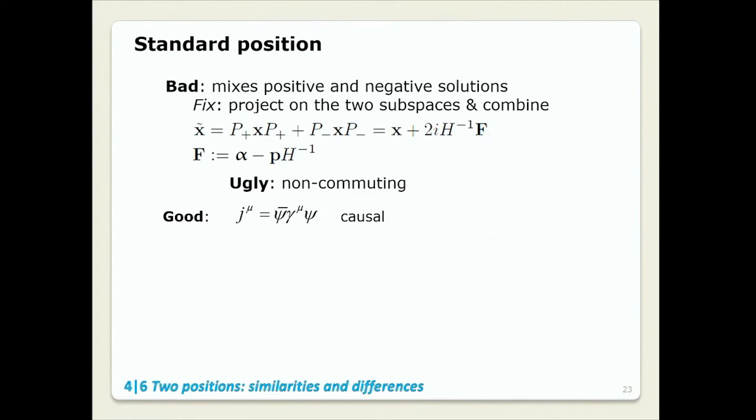So let's see. Standard position. Bad because it mixes positive and negative energy solutions. Fix. Project positive and energy states separately. Add it up. Lovely. Looks ugly. And it becomes non-commuting. Okay. What is good about it? It is associated with traditional Dirac probability current, which is proven to not to conform to the conditions of Hegerfeldt theorem that promises you violation of causality, and actually be causal. So, okay. Make your choice, gentlemen.